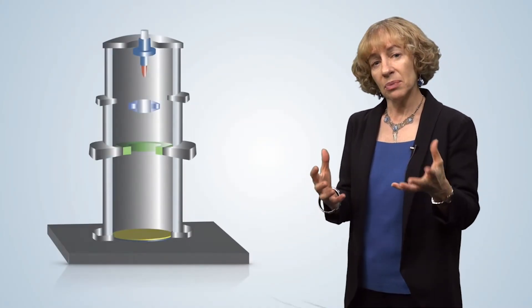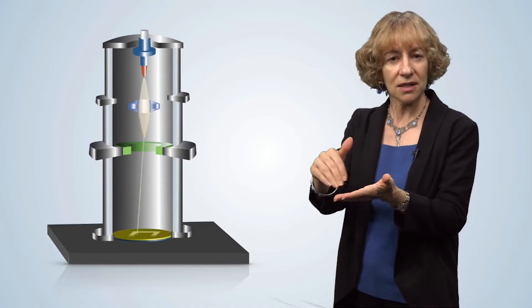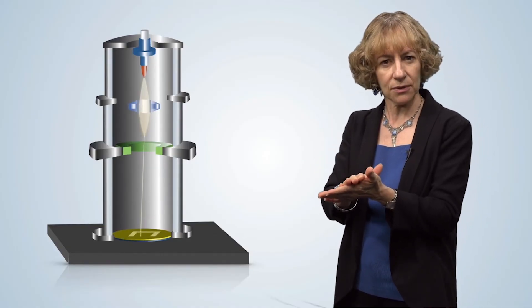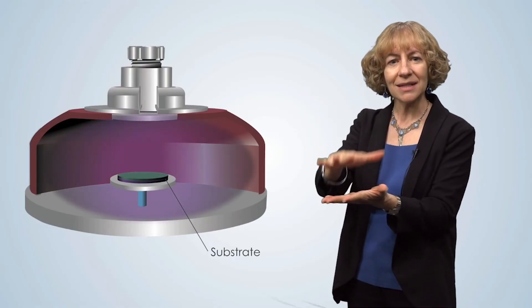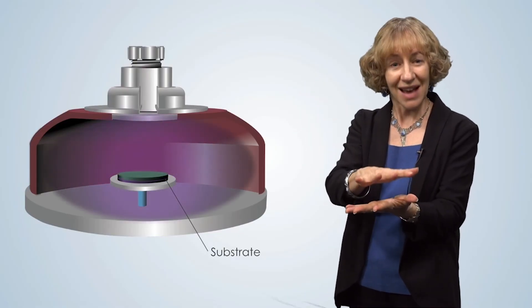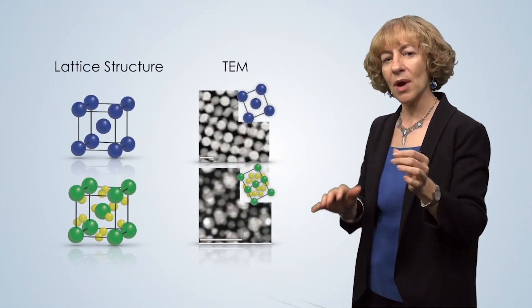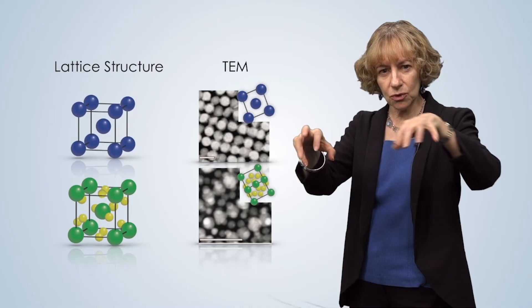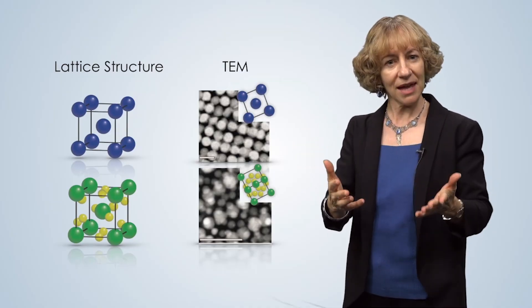First, to create patterns at the nanoscale, we can use a beam of electrons that we steer to draw patterns with feature sizes as small as 10 nanometers. We can deposit materials that are one atomic layer thick, and that's less than a nanometer thick. We can even persuade atoms and molecules to arrange themselves into organized patterns with nanoscale features.